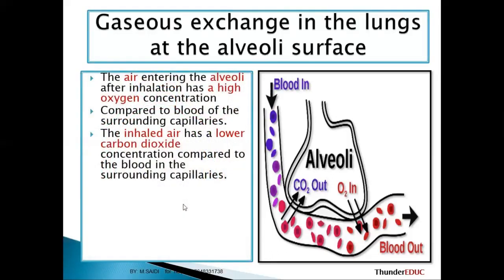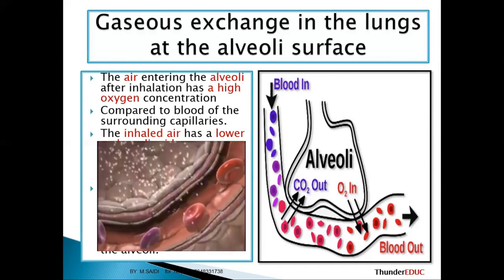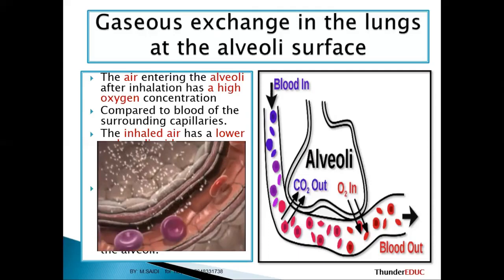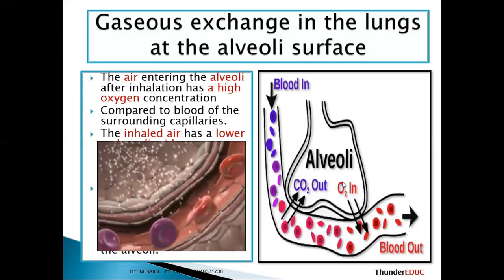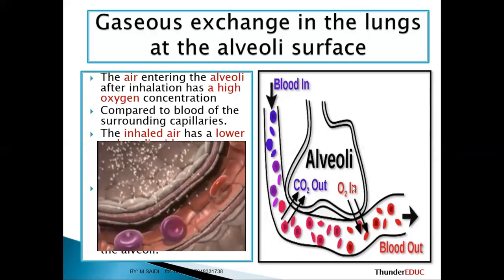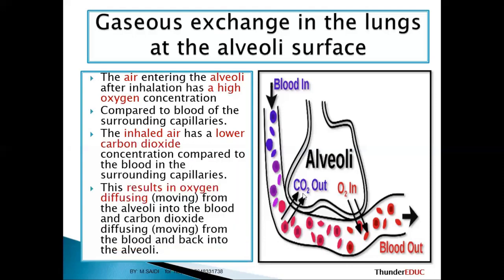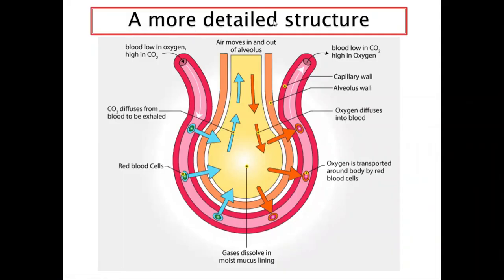This results in oxygen diffusing from the alveoli into the blood, and carbon dioxide diffusing from the blood back to the alveoli. There is too much concentration of oxygen in the lungs and less in the blood, so diffusion goes in that direction. Too much carbon dioxide is in the capillaries and less in the lungs, so it moves that way. That is how gaseous exchange takes place.